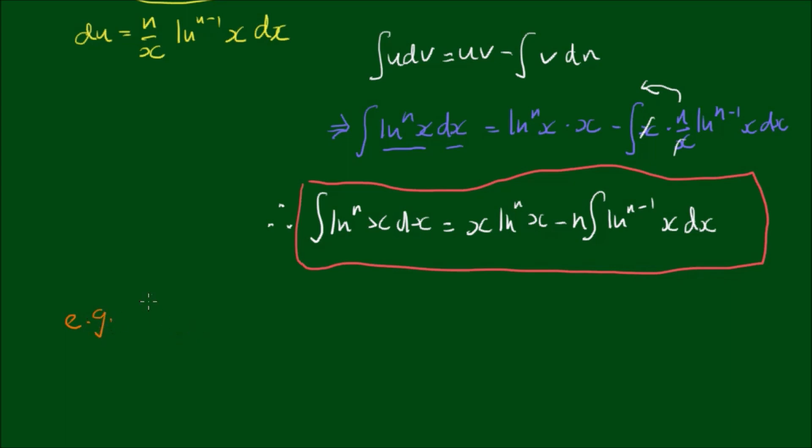So let's use the reduction formula to find the integral of the log to the third power, or log cubed of x with respect to x. Well, substituting into the formula we've just derived, we have x at the front by log to the third power of x minus n, which is the power, minus 3 by the integral of the natural log to the 3 minus 1 power of x dx. And of course 3 minus 1 reduces down to 2.